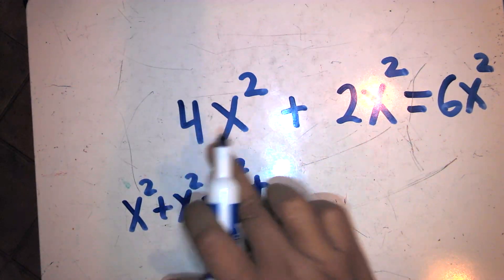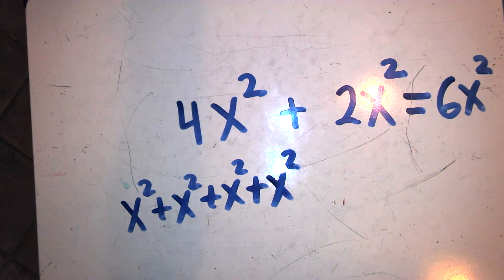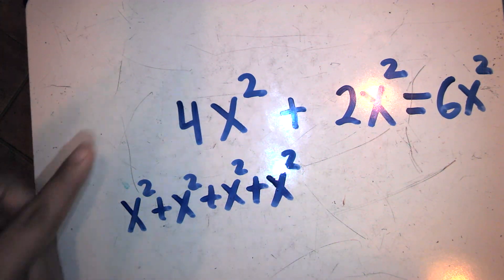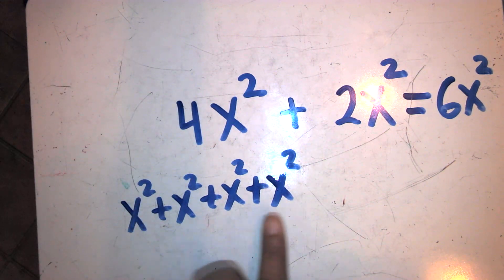Remember, multiplication is repetitive addition. So instead of writing x squared plus x squared plus x squared plus x squared, I could just write it as four times x squared. It's four groups of x's being added to itself four times.